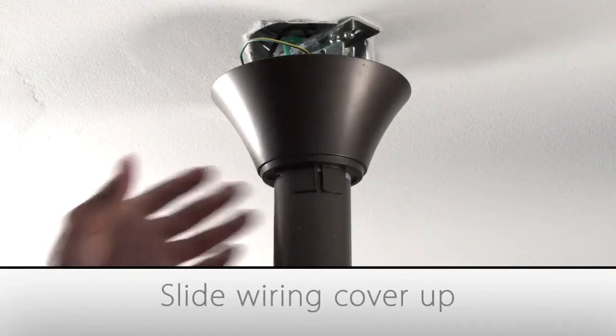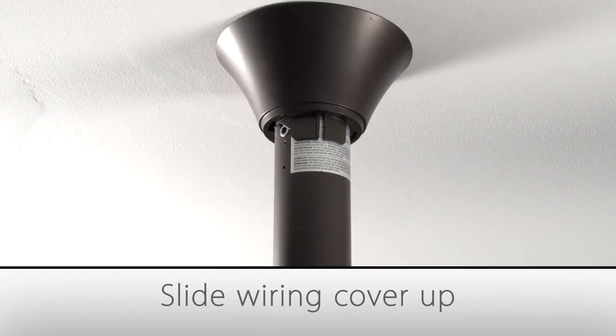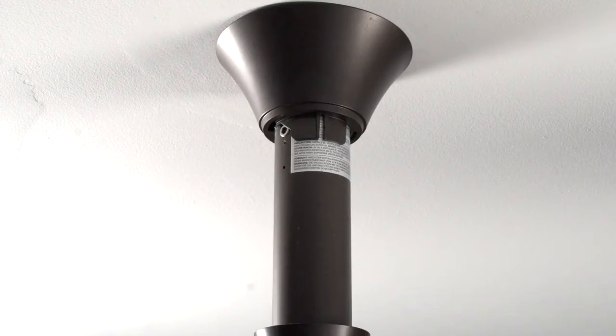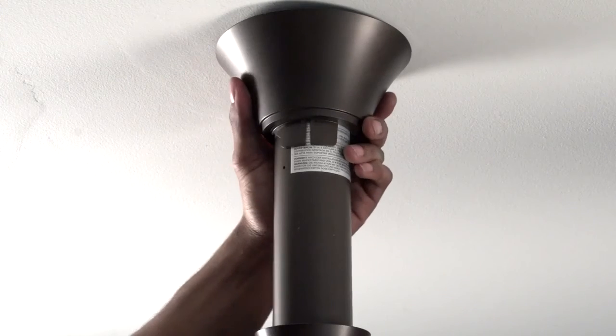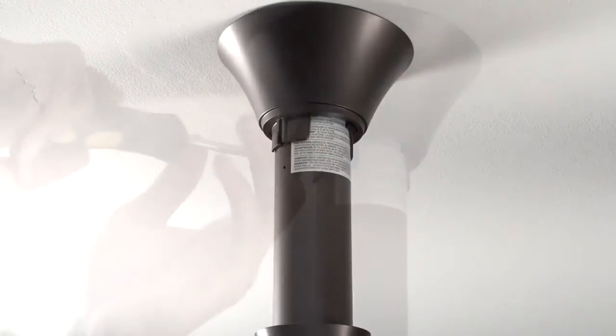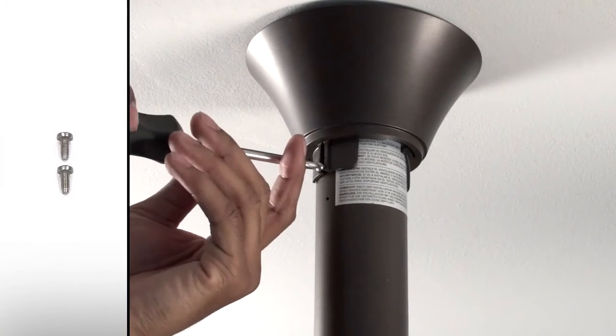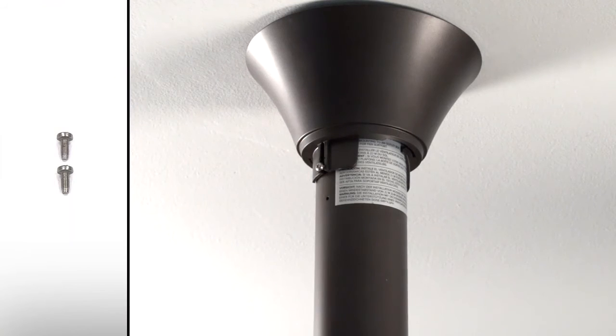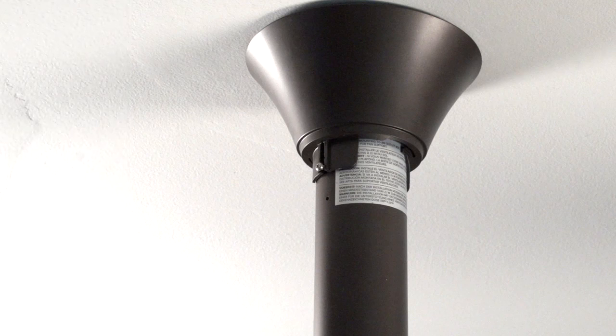Next, slide the wiring cover into position, allowing roughly a one-eighth inch gap between the cover and the ceiling. Rotate the cover so that the mounting slots align with the screw holes. Once the wiring cover is in position, secure the wiring cover screws on both sides of the extension tube to hold the cover in position. Make sure that no wiring is visible.